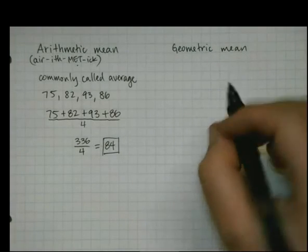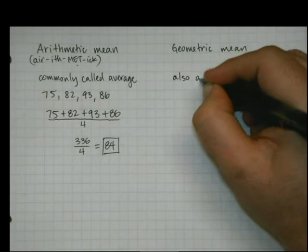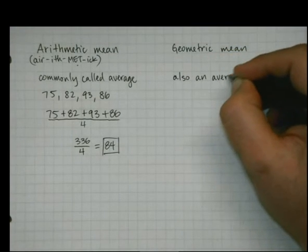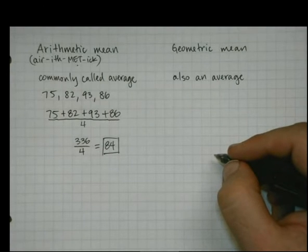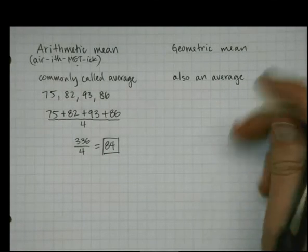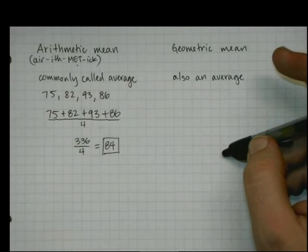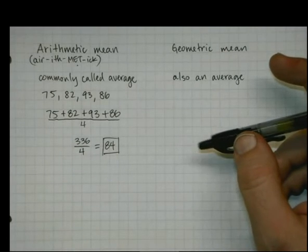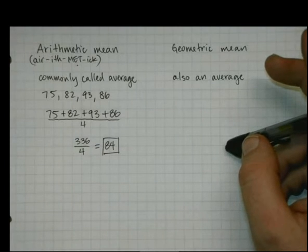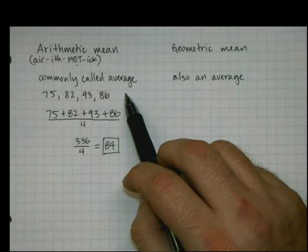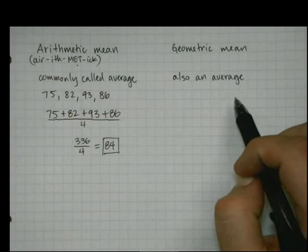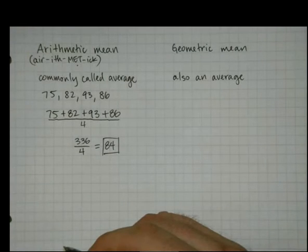Geometric mean is also an average, even if that's not the one we think of when we talk about mean. Geometric mean is when numbers are changing, but not necessarily at a linear rate. If arithmetic mean is used more in linear collections of data, geometric mean would be used in exponential collections of data.